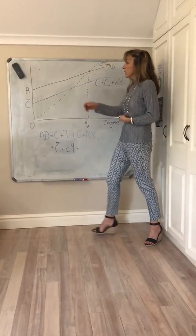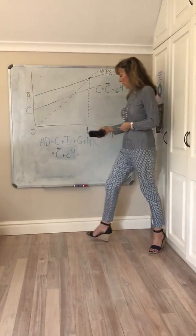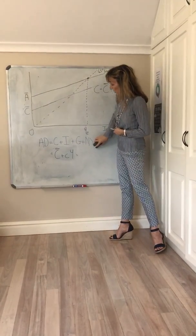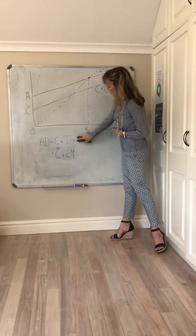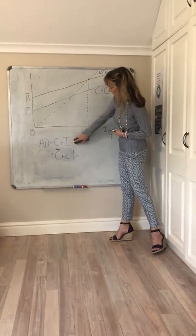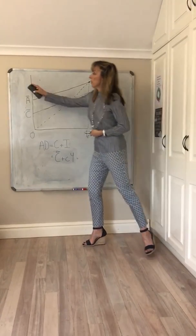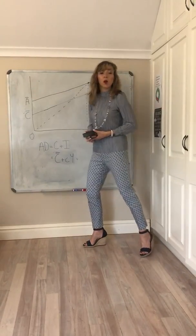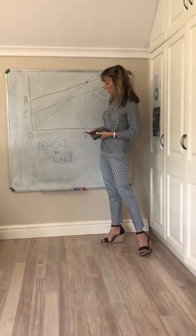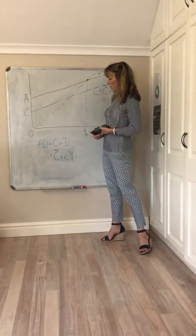For simplicity, we're going to assume that we've got a very simple model economy. There's no government and it's closed — there's no trade. So it's a simple Keynesian model. And later on, we'll relax these assumptions and reintroduce those terms.